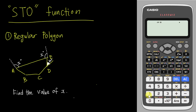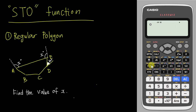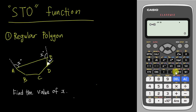You can do the same thing — for example, 100 stored into B: just tap store then B. If I do shift recall, you can see A and B now have their numbers. I'll change all of them back to zero now. I'll just double-check by doing shift recall.